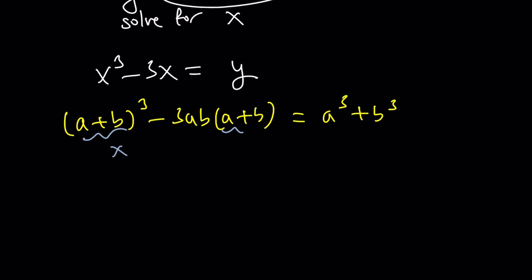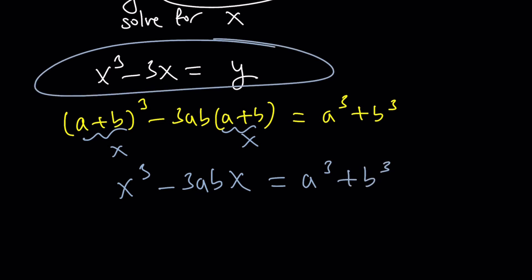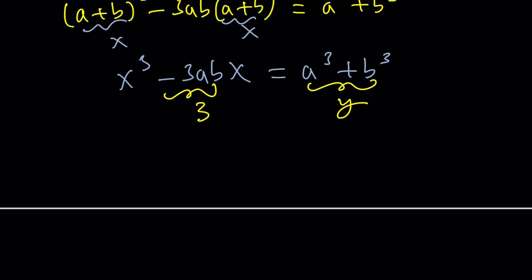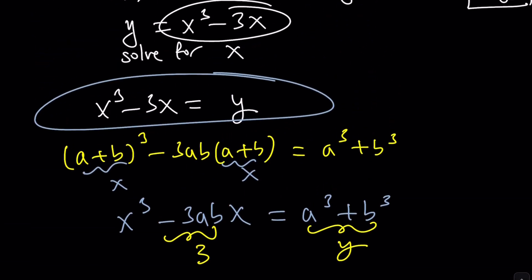And by replacing a plus b with x, we're getting a cubic equation that looks like this. And by comparing the two equations, we kind of get the following. In this equation, the coefficient of x is negative 3. Here, it is negative 3ab. So I want this to be 3. And my constant term is y, so I want this to be y. This gives us a system of equations. Solving the system will give you the cubic formula.